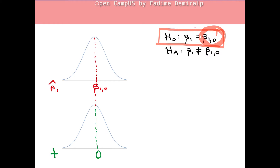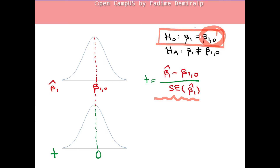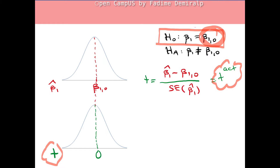To standardize, we subtract the center of the distribution from the estimator and then divide by the standard deviation, which in our case is the standard error of the estimator. After computing the t-statistic — call it t-actual — which can be negative or positive, the p-value is the sum of the probability that t is greater than the absolute value of t-actual and the probability that t is less than the negative of t-actual.